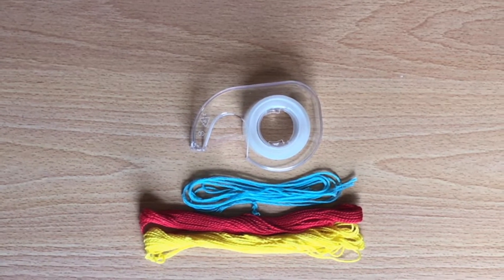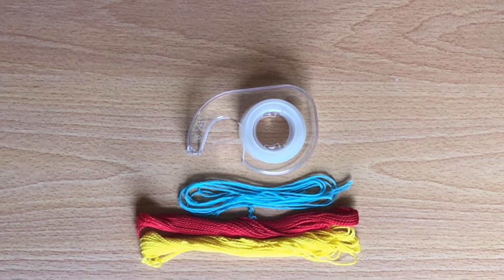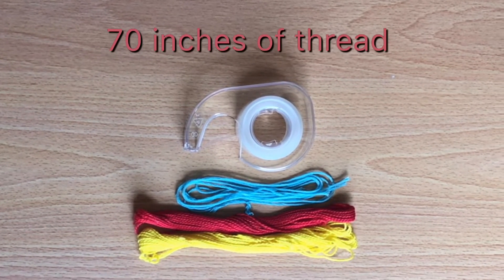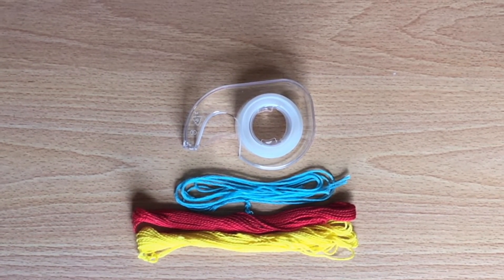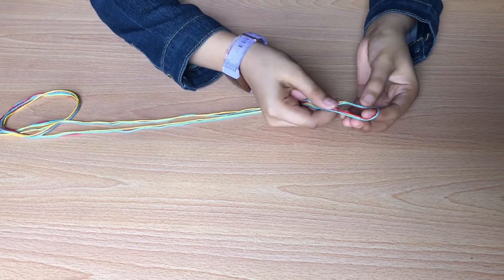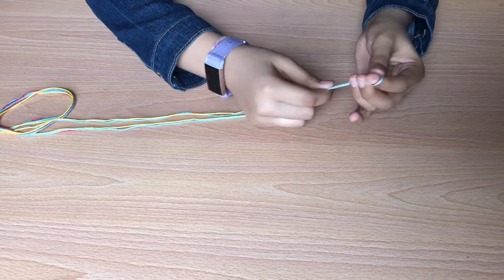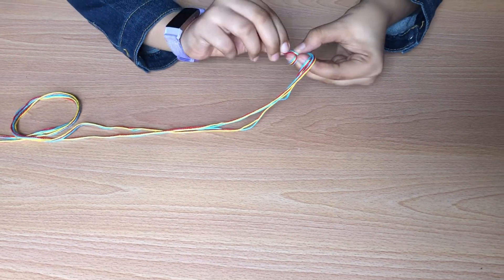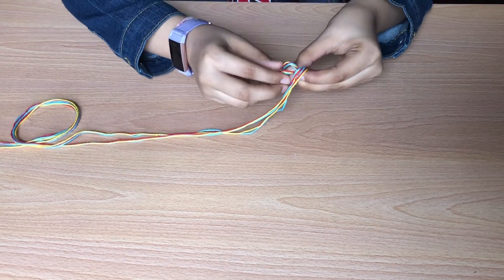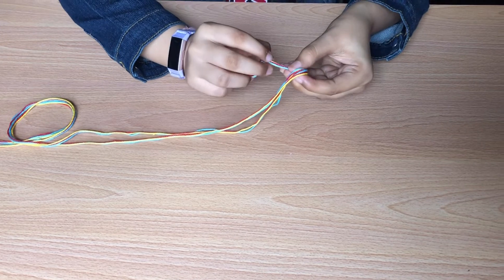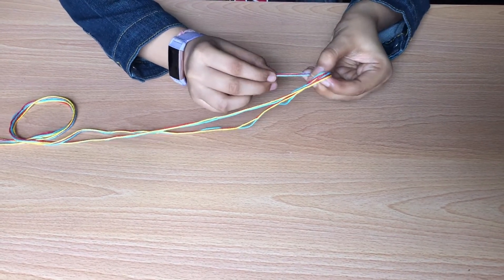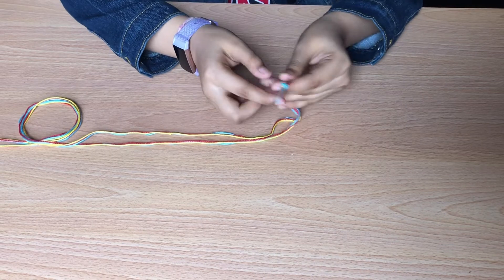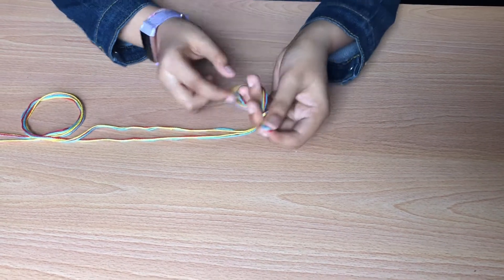To make the second bracelet you'll need three different colors of thread each 70 inches and some tape. Take the thread and fold it in half then tie a knot on the looped side. Make sure the knot is nice and tight. Then take the looped side and tape it to the table.